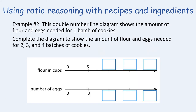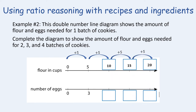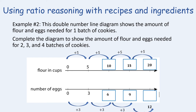In this example, the double number line shows the amount of flour and eggs needed for one batch of cookies — five cups of flour and three eggs. We'll complete the double number line for two, three, and four batches. Following the pattern of adding five for flour and adding three for eggs, we fill in the values. We'll use this information to answer some questions on the next slide.